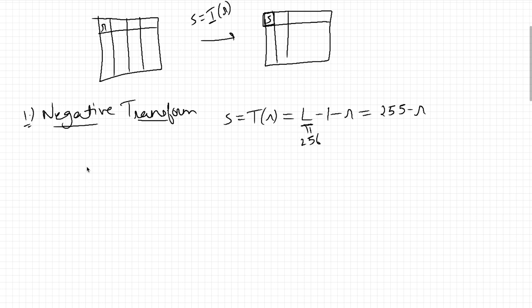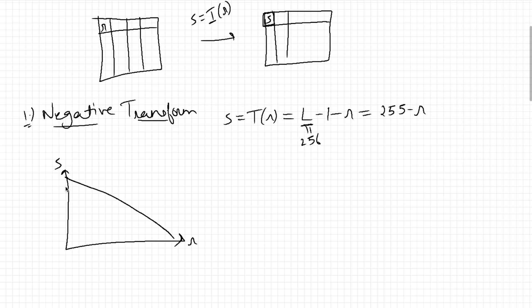Why do we use image negatives and how does it look? If we draw a graph with R on the x-axis (input pixel) and S on the y-axis (output pixel), the graph for this transform is a descending line, with L-1 represented on both axes. We use the negative transform in images where we have a black background and it would be better to have a white background, or vice versa. As shown in figure 3.4 in the book, applying the negative made details much more visible in the output image.